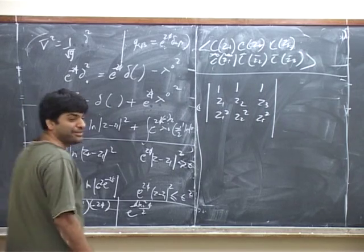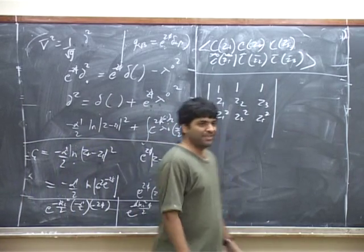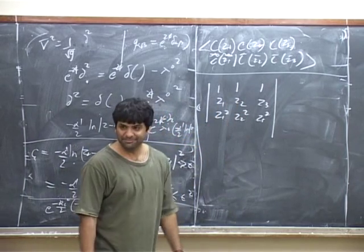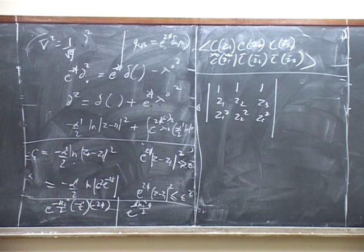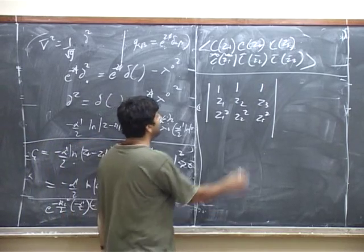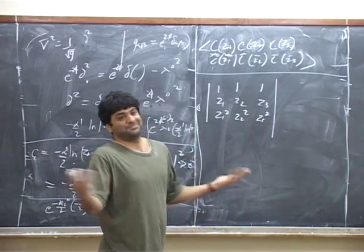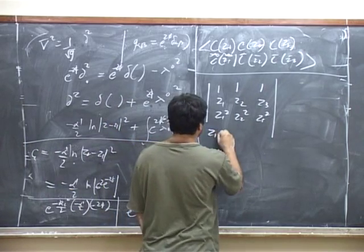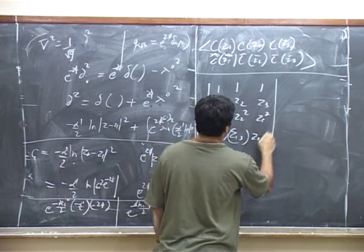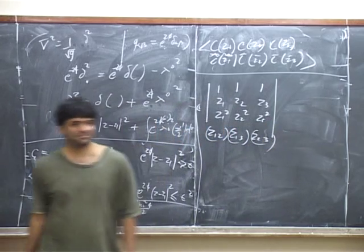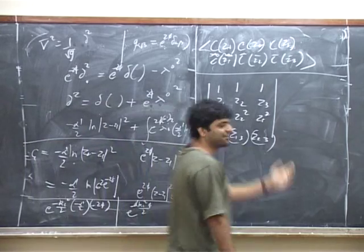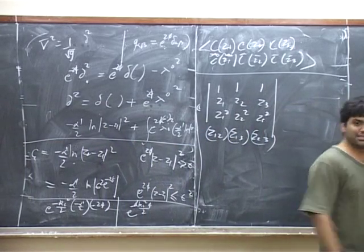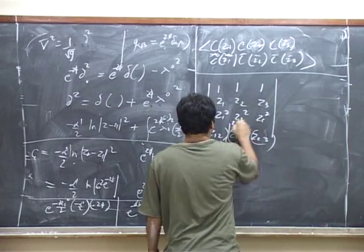Now what is this determinant? It must vanish when any of z1, z2 are equal, and it must be of degree 3. What are the options? It has to be z1,2, then z1,3, then z2,3. It has to be proportional to this times a number. We don't care about numbers. So this determinant is z1,2, z1,3, z2,3, and then computing you get a Vandermonde determinant.